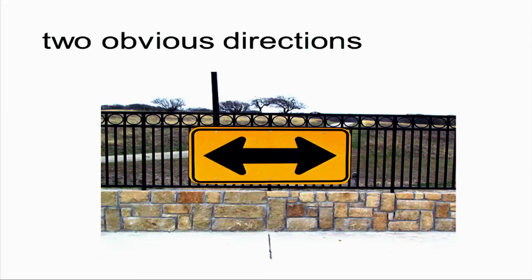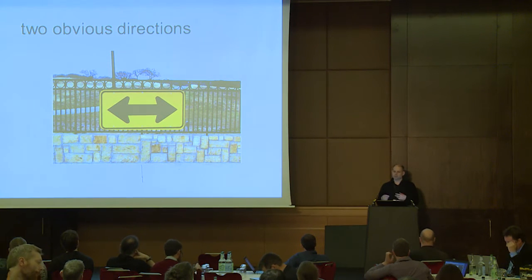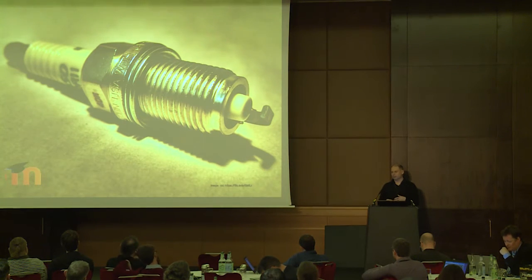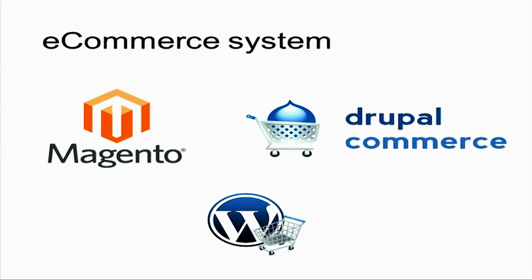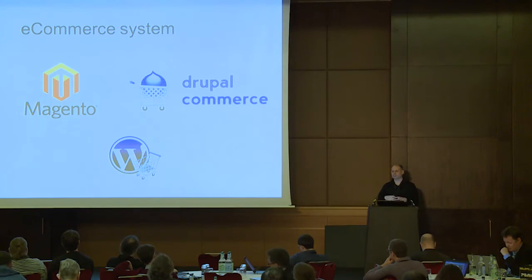With Moodle there are two obvious directions to go. One is to use an enrolment plugin that takes you off to something like PayPal or Stripe or various other payment gateways, or put in place an e-commerce system that allows you to do a little bit more. Using a plugin or a Moodle module that does enrolment is a really good way to do that because it's quite simple — essentially it takes you off to PayPal, you pay some money, and if you pay that money you get into the course. With an e-commerce system you might want to do more complicated things, and there are great systems that allow complicated workflows, discounts, and that sort of thing.